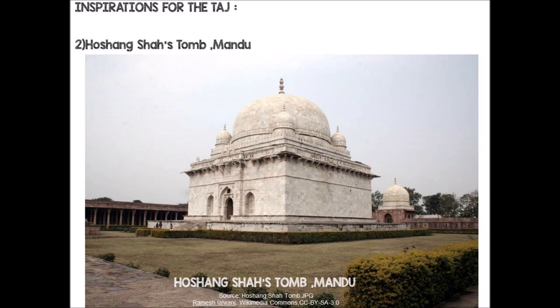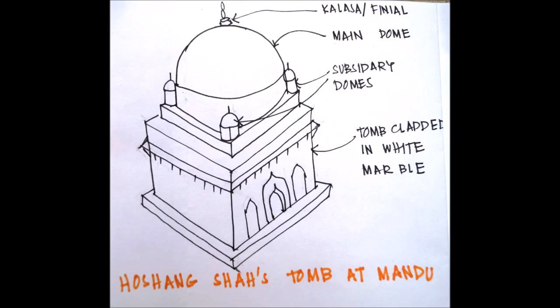The next inspiration is Hushan Shah's tomb at Mandu. In this tomb, we find a cuboid base, and on that cuboid base there is a dome elevated by a drum. Around the main dome we have subsidiary smaller domes, and the dome is topped by a finial. The entire structure is clad in white marble.